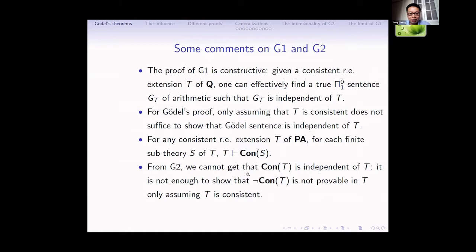Some comments on G1 and G2. First, G1 is constructive: given any consistent RE extension T of Q, we can effectively find a true Pi-1 sentence G such that it is independent of T. For Gödel's proof, assuming only that T is consistent is not sufficient to show that the Gödel sentence is independent of T. To show this, we need to assume T is omega-consistent. In fact, this assumption is too strong — T being 1-consistent or T being sigma-0-1 sound is also okay to prove that the Gödel sentence is independent of T.